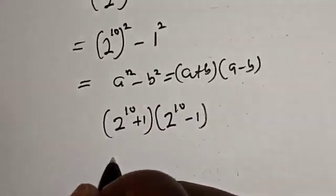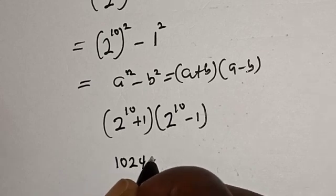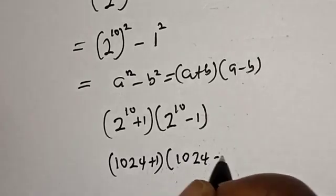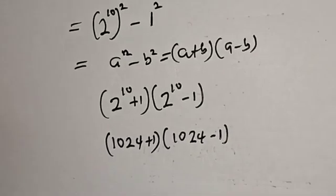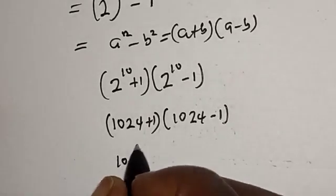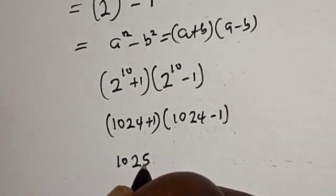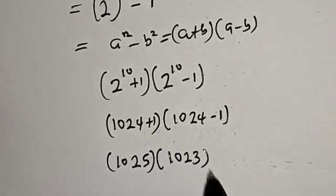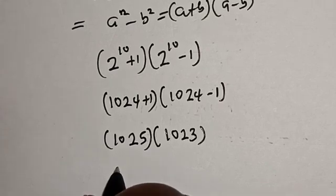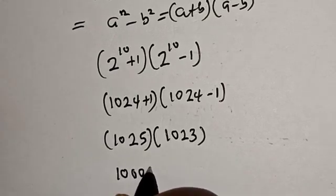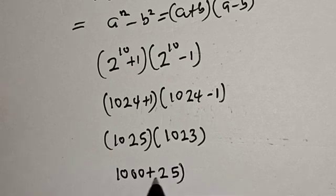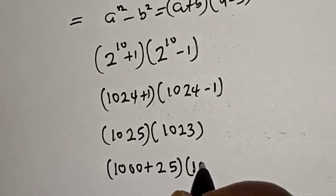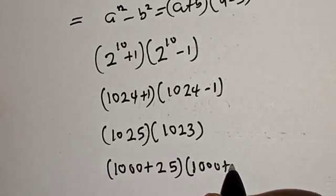2 raised to 10 equals 1024. Now 1025 can be written as 1,000 plus 25, multiplied by 1,000 plus 23.